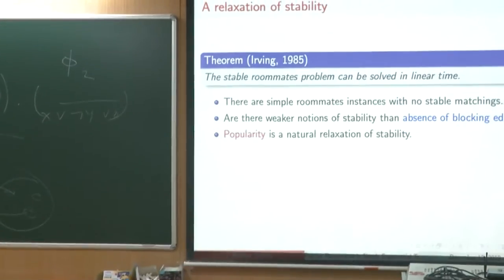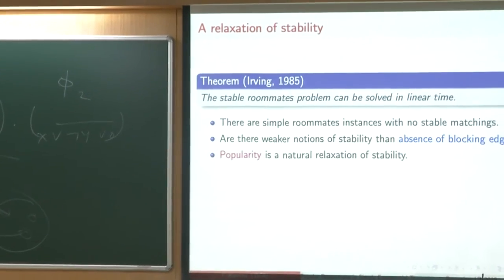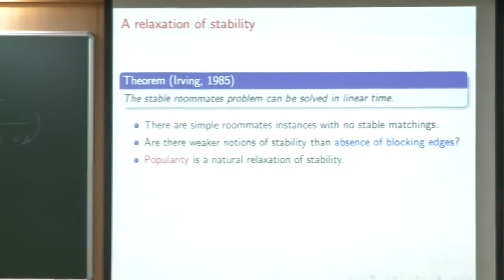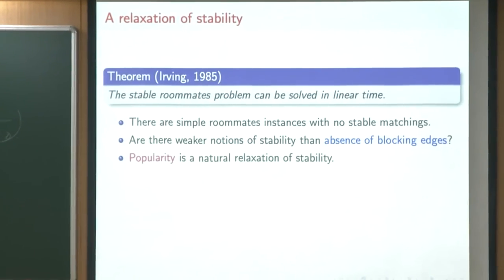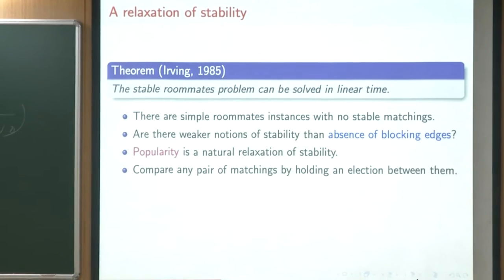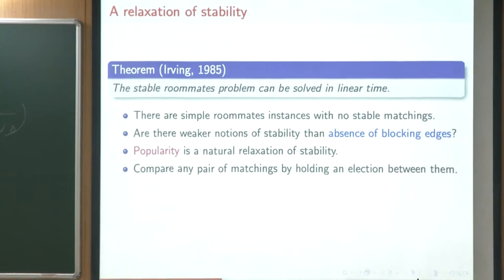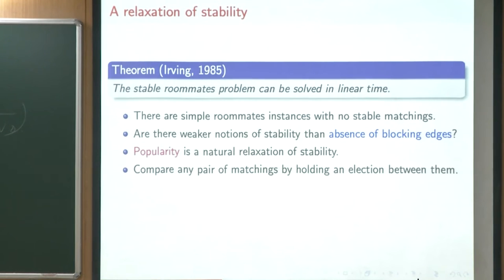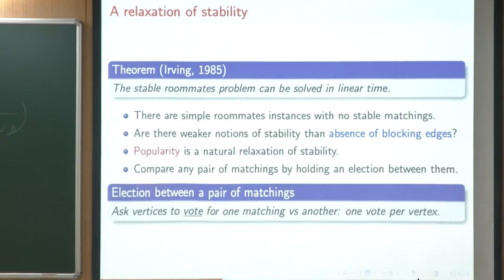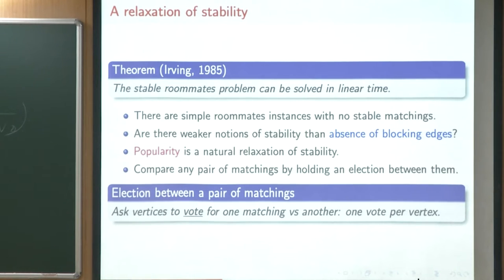Popularity — I hope you will be convinced at some point — is a natural relaxation of stability. This works by comparing any pair of matchings by holding a head-to-head election between them. How do we compare a pair of matchings? We ask every vertex to vote for one matching versus another.